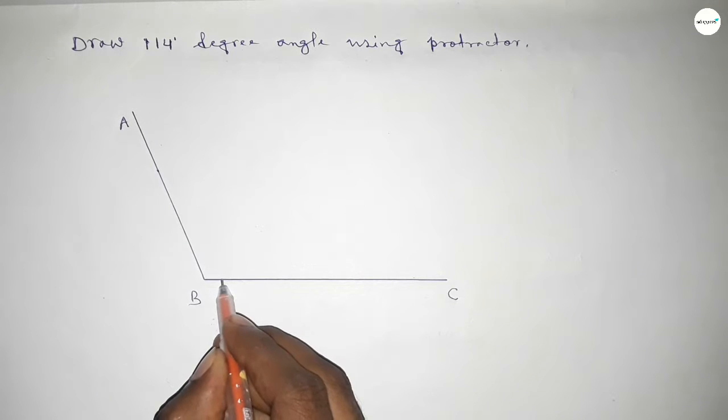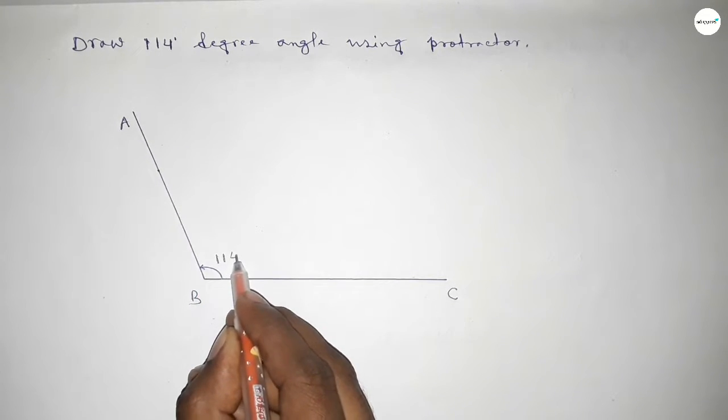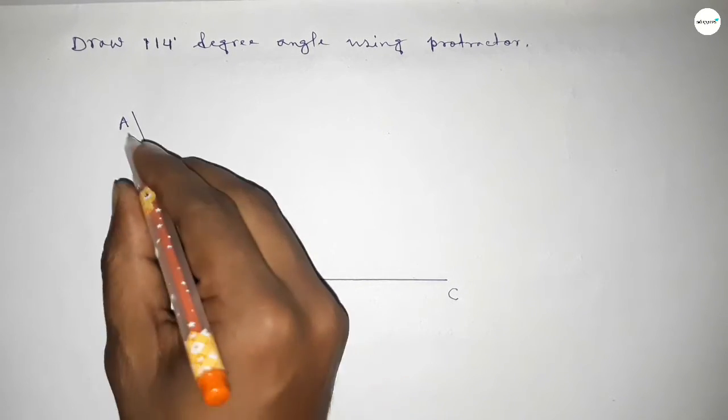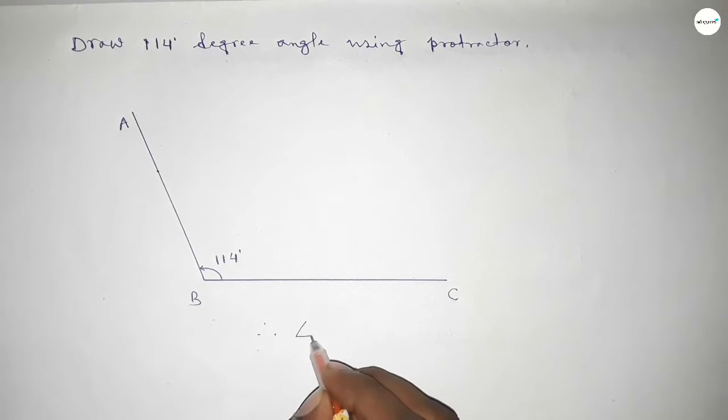So angle ABC is 114 degrees. Therefore, angle ABC equals 114 degrees.